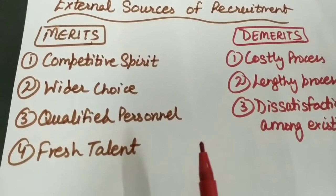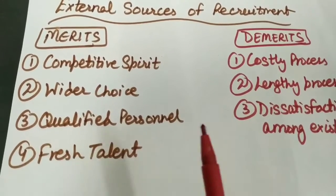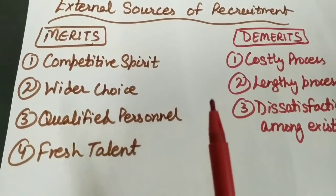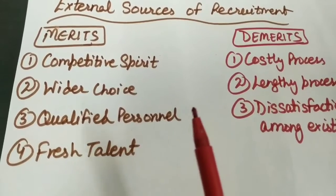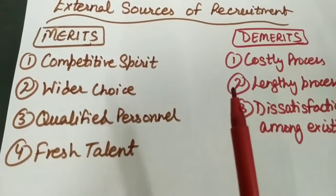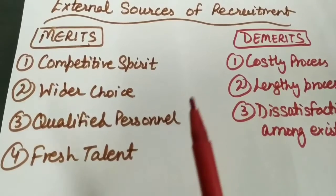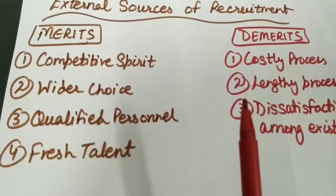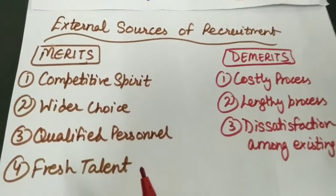Third merit is qualified personnel. External sources of recruitment ko use karke management qualified and trained people attract kar sakti hai to apply for the vacant jobs. Organizations are able to attract qualified and trained people from outside. Next is fresh talent - jo present employees hain, they may be insufficient and may not be able to fulfill the specifications of the jobs to be filled. So external recruitment provides a wider choice and it brings new blood into the organization.